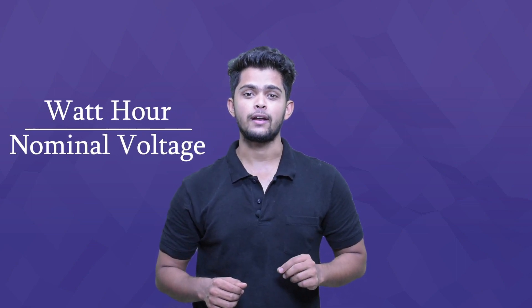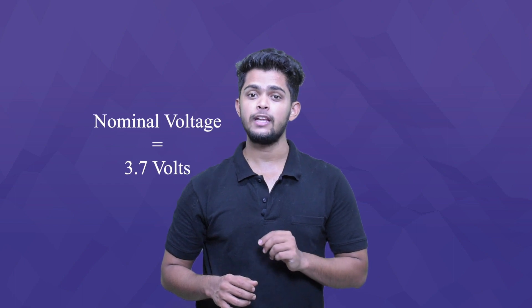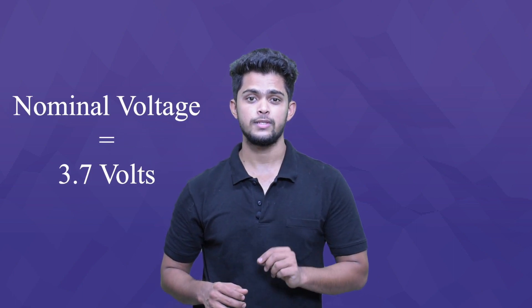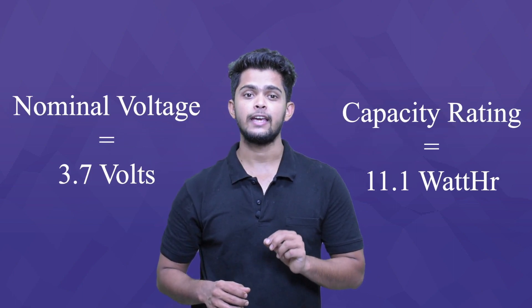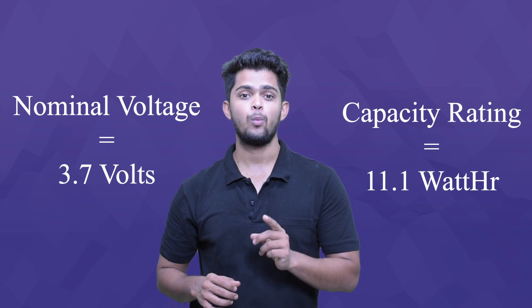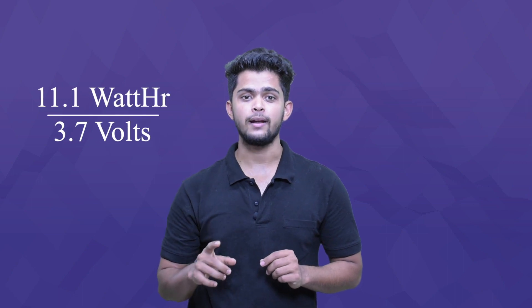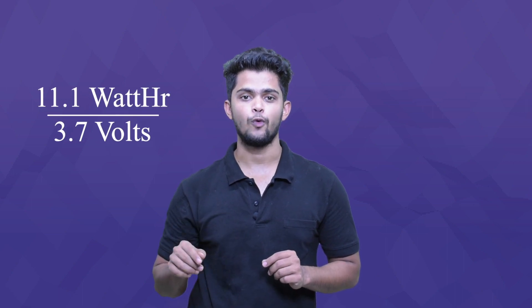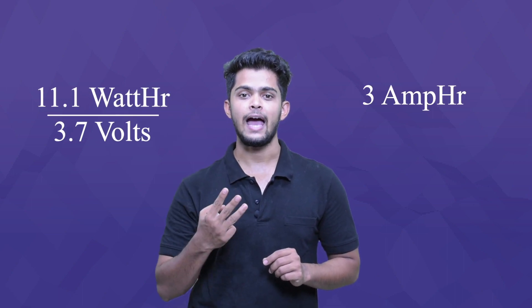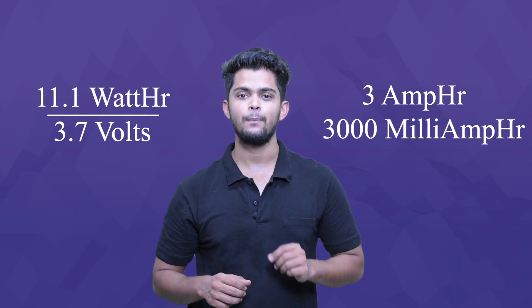Now let's find out how to get ampere hours. To find amperes, we would need the nominal voltage of a battery. By dividing the watt hours by the nominal voltage, we get amperes. For example, a lithium-ion cell with a nominal voltage of 3.7 volts and a capacity rating of 11.1 watt hours — by simply dividing 11.1 watt hours by 3.7 volts, we get 3 amp hours or 3000 milliamp hours.